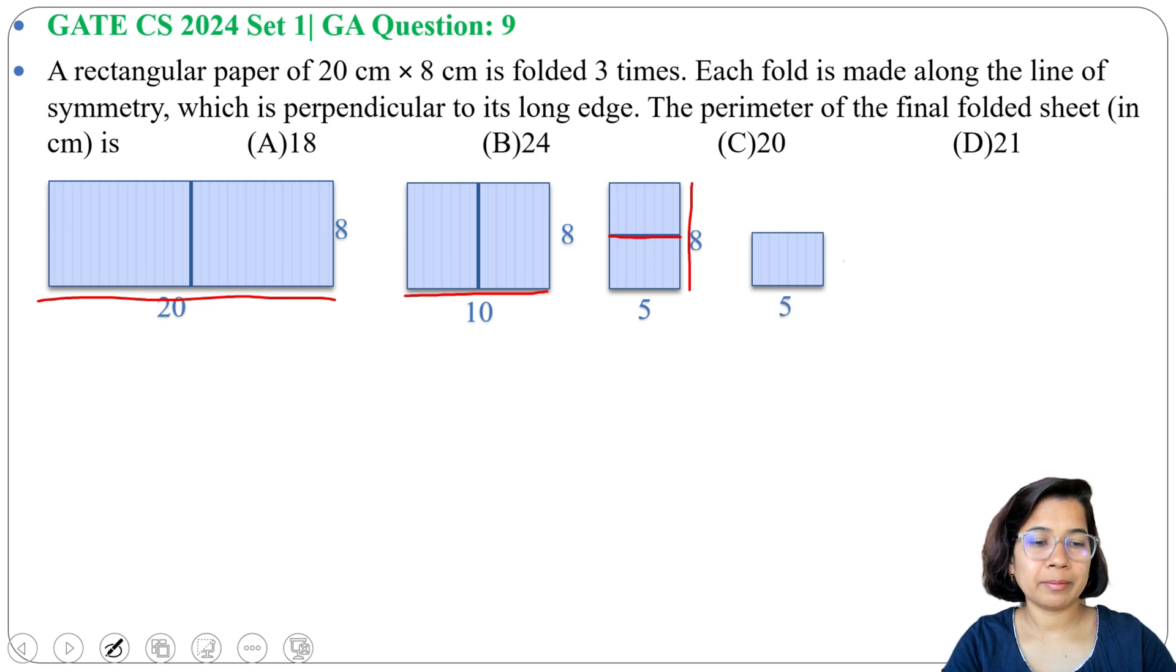Here length is 5 and breadth is 4. So 8 ÷ 2 is 4. So this side will be 5, this side is 4. Now perimeter will be 5 + 5 is 10, plus 4 + 4 is 8.